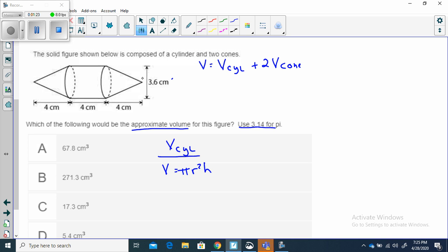Right here it says that this diameter is 3.6. It's the same for the cone and the cylinder, but it's not the diameter I need. It is the radius I need, half of that. 3.6 divided by 2 would give me my radius. That would give me 1.8 centimeters for the radius.